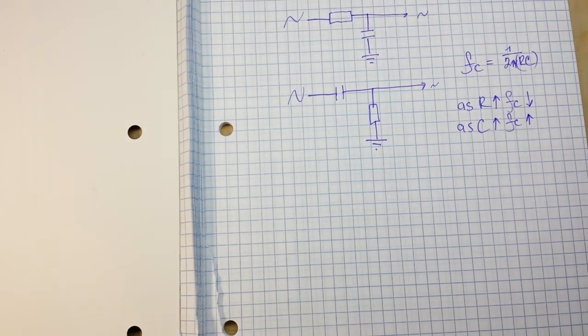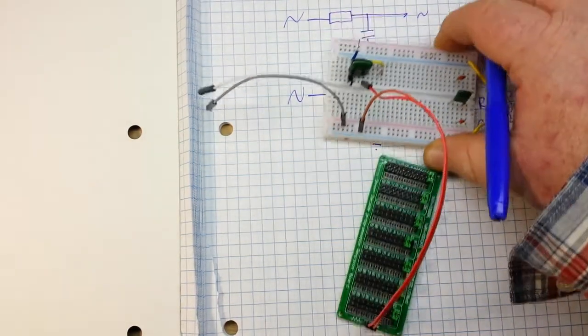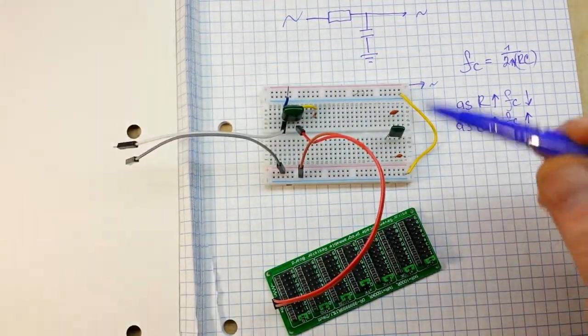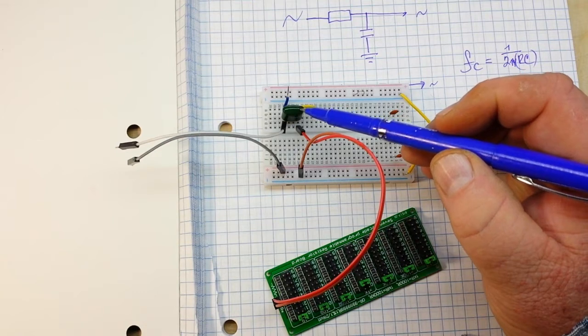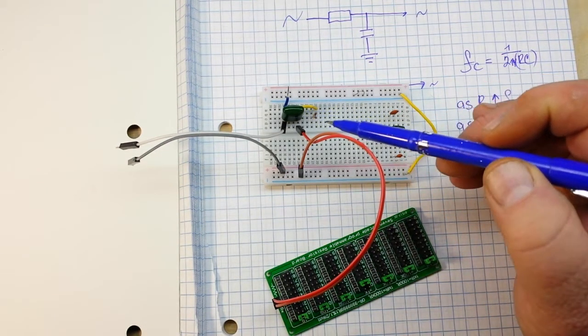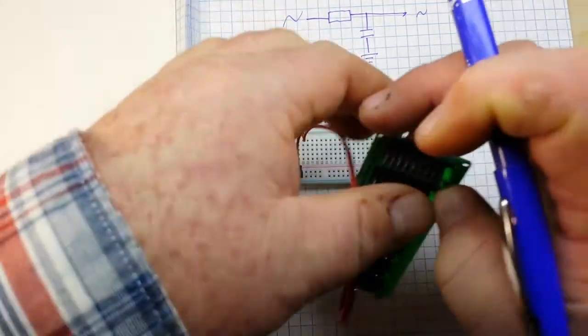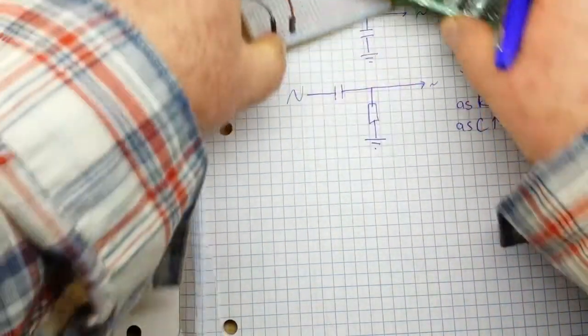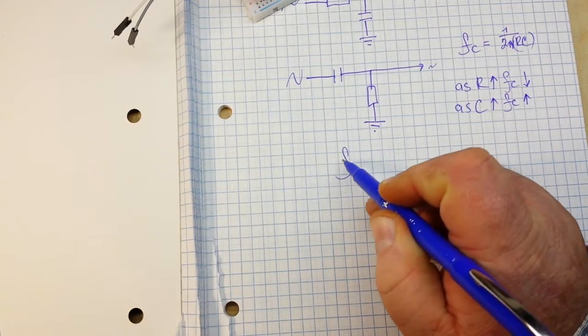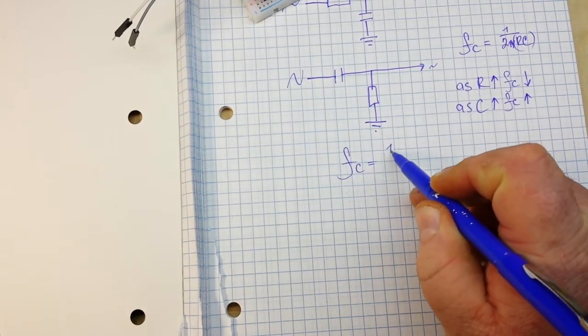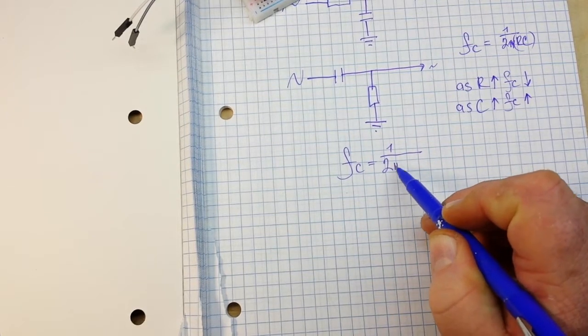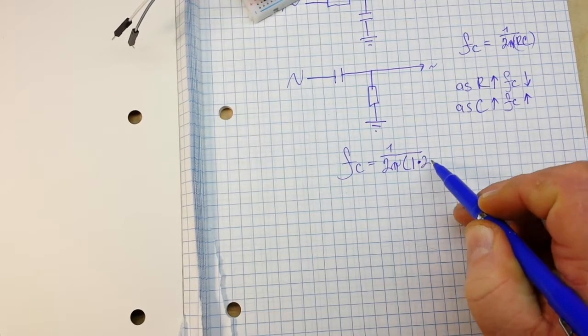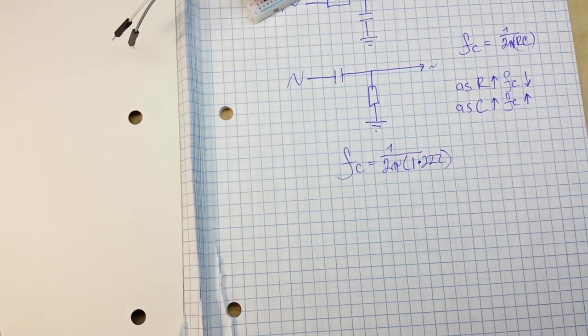So I've set one up here for us. What we've got here is an input for our function generator going through what I measured as a 222 nanofarad capacitor. Then it goes through our adjustable decade resistance box, which in this case is set at 1k. So for this particular filter, our cutoff frequency is the reciprocal of 2 pi times 1 times 222.